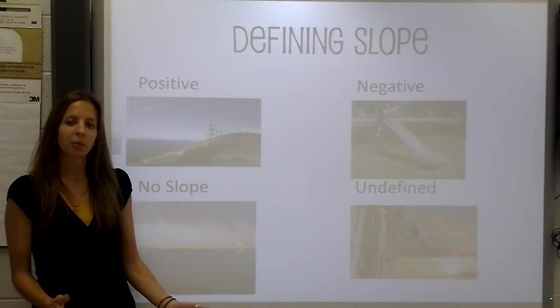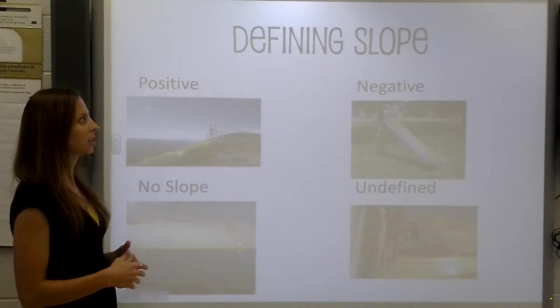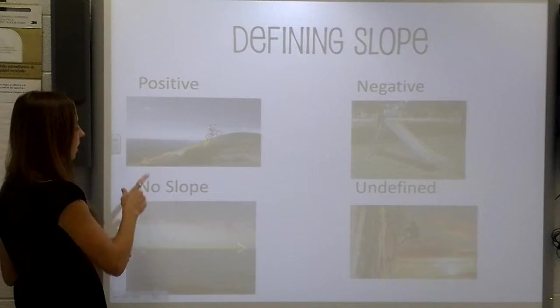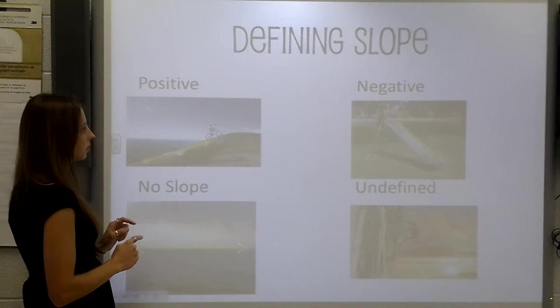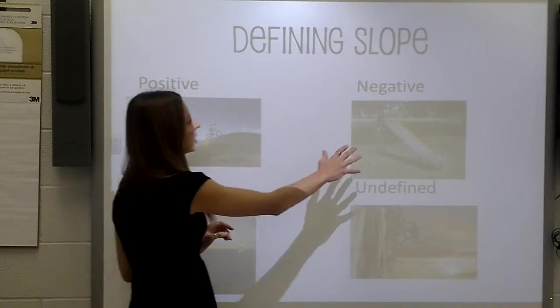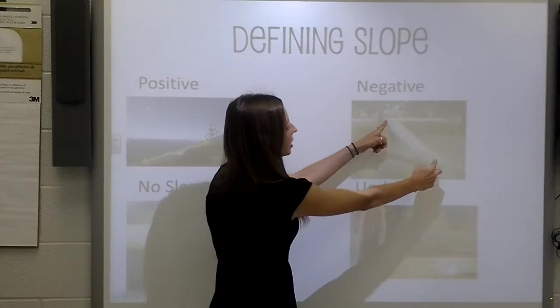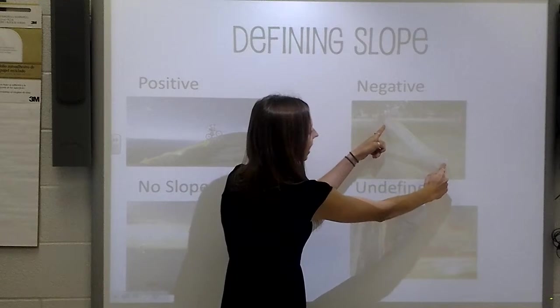Before we get started with formulas, let's just talk about the different types of slope. A slope from left to right that goes up is a positive slope. A negative slope from the left side to the right side goes down.